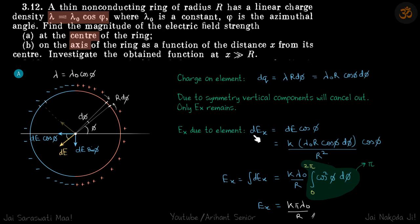So we will only consider dE cos phi. E_x due to this element is dE_x equals dE cos phi, dE is k dq by r squared times cos phi. We integrate this quantity over the whole circle. This will be cos squared phi d phi, which over 0 to 2 pi is a standard result for cos squared for a full cycle is pi. This gives E_x as k pi lambda naught by r, which is our answer for the field at the center of the ring.